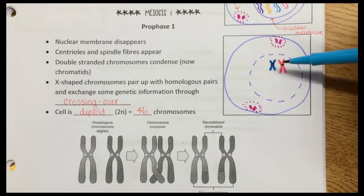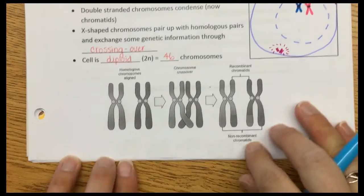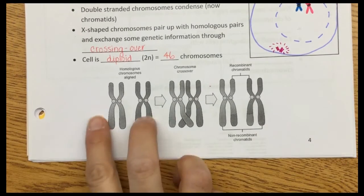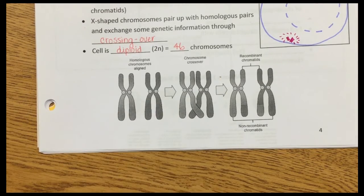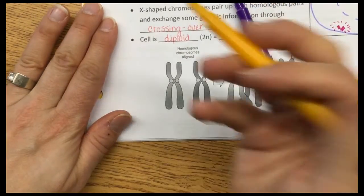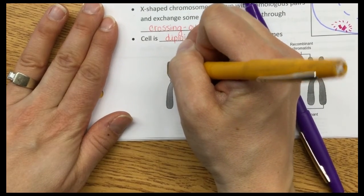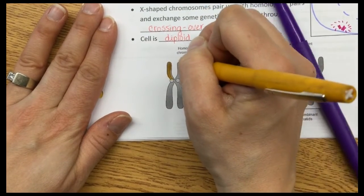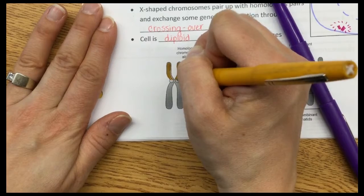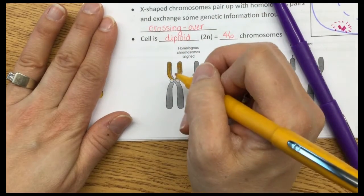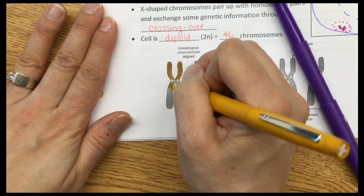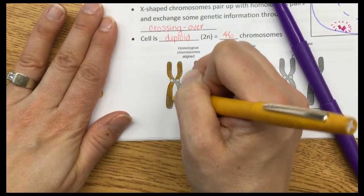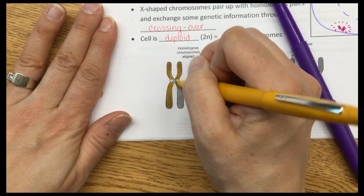Now, what's really interesting here is that we have some crossing over that happens. Let's look down here. If we have two homologous chromosomes, I'll use my yellow and my purple. This is my yellow set of double-stranded chromosomes. I'm just going to gently color them in so you can see it's all one color.